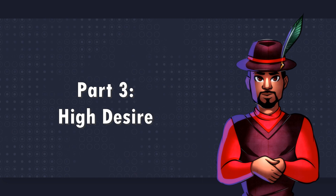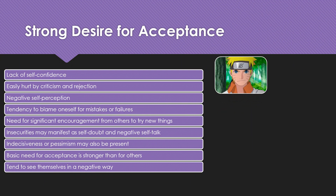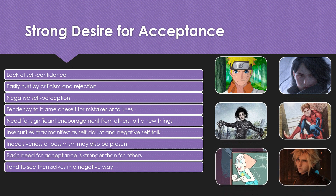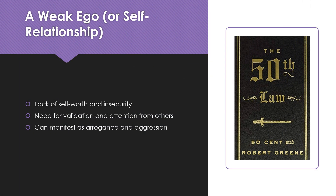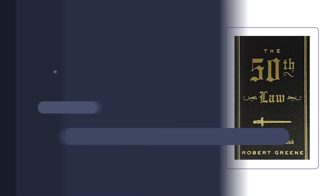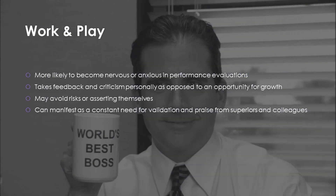Part 3: A High Desire for Acceptance. People with a high desire for acceptance may lack self-confidence and be insecure, often feeling hurt by criticism, rejection, and failure. They may see themselves in negative terms, blame themselves when things go wrong, and worry about being judged as inferior. They may require significant encouragement from others to try new things. Traits that describe people with a high desire for acceptance include being non-assertive, insecure, self-doubting, and indecisive or pessimistic. Such people may need professional counseling to gain greater self-confidence and acceptance. In sports, less ego-threatening ones such as walking or cross-country skiing are more suitable to those who dislike being evaluated.